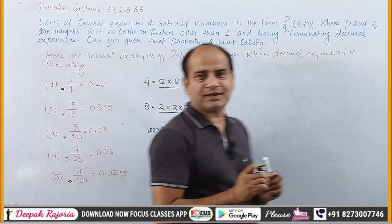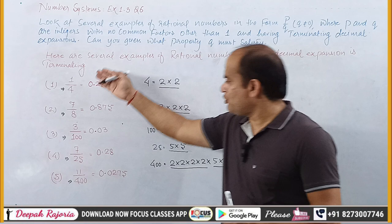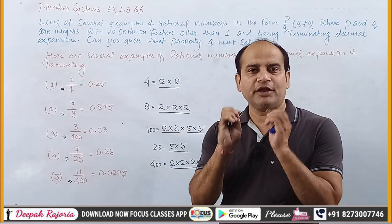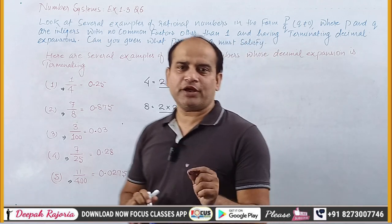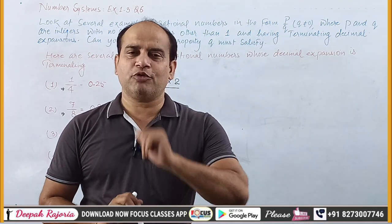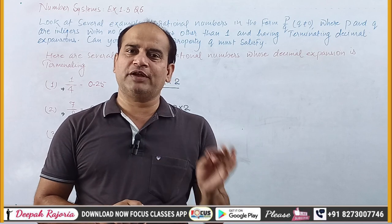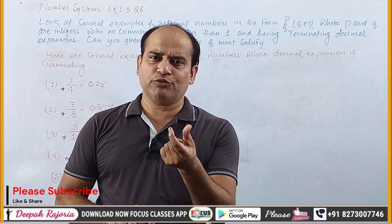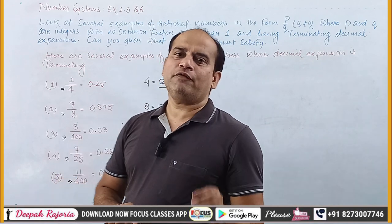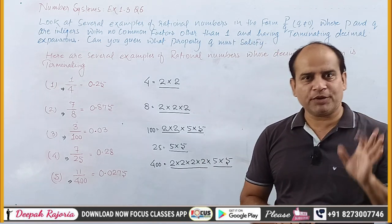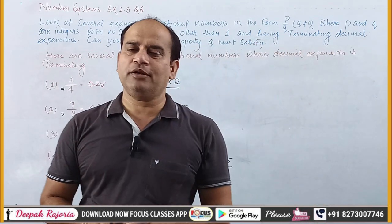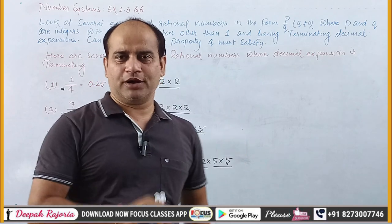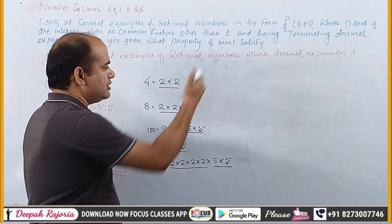तो इस चीज़ से हम लोग एक चीज़ समझ जाते हैं — कि भाई, कोई भी number जो P upon Q की form में है, अगर उसका decimal expansion terminating है, तो उस case में Q एक property satisfy करता है: उसका जो denominator होगा, अगर उसको हम लोग prime factorize करें, तो या तो prime factors में 2 as a factor दिखाई देगा, या फिर 5 as a factor — वो एक भी हो सकते, एक से ज़्यादा भी हो सकते हैं। या फिर 2 और 5 दोनों ही factors के तौर पर दिखाई देंगे। तो ऐसे case में decimal expansion terminating होगा। I think ठीक है, समझ आ गया है।